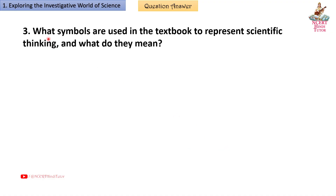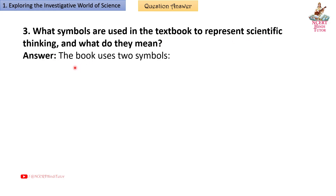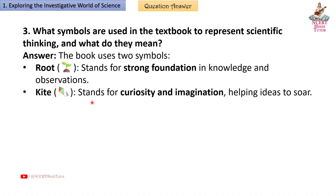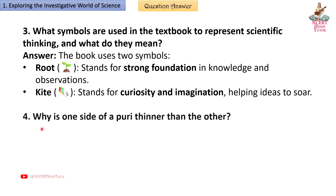Question 3: What symbols are used in the textbook to represent scientific thinking and what do they mean? Answer: The book uses two symbols — Root stands for strong foundation in knowledge and observations; Kite stands for curiosity and imagination, helping ideas to soar.